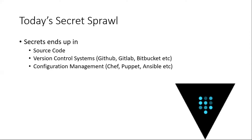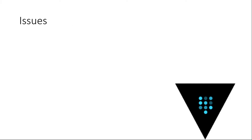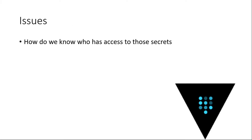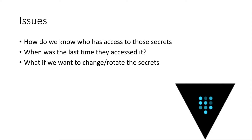Today we live in a world called secret sprawl. Secrets end up in your source code — you're coding something and it ends up in your version control system. You might have it in GitHub where somebody committed code with the secret in it. You might have it in your configuration management — Chef, Ansible — you might leave secrets there because you need to configure your software to run it. So how do you know who has access? Now that it's in GitHub, everybody has access, but who actually last used it and when?